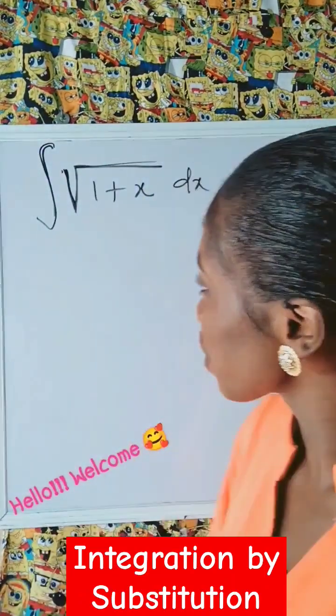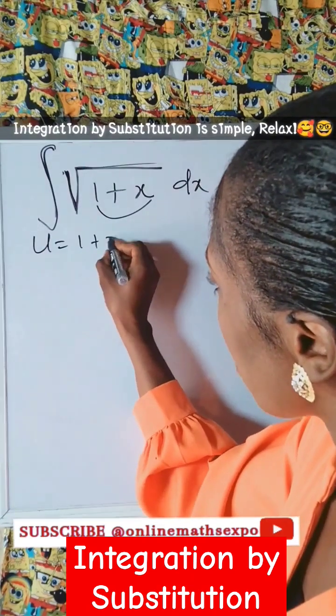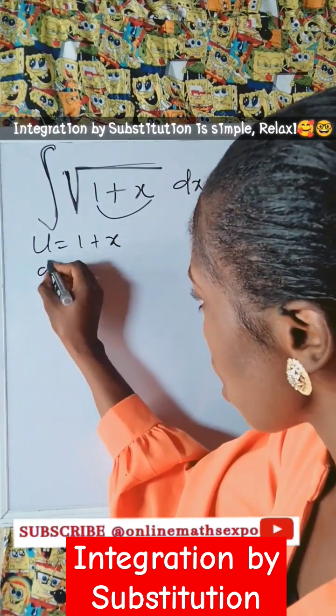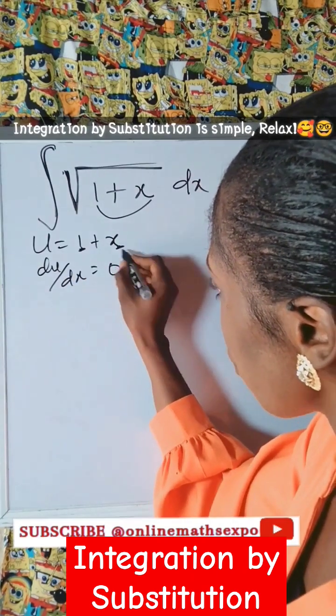It's integration by substitution. What you do is let this be u. So we're going to have u is equal to 1 plus x. Differentiate. We have du/dx is equal to—this gives us zero. Differentiate x, you have one.